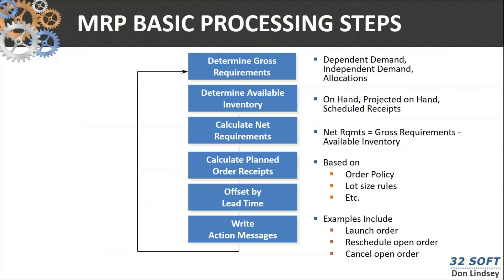The basic process of MRP follows this sequence: first, determining the gross requirements; then determining available inventory on hand and scheduled receipts, projecting that across the horizon; then calculating what we call net requirements. If you have a projected quantity on hand that's negative, that's the same as a net requirement. MRP is going to plan an order release for that period, offset it by the lead time to calculate the difference between the due date and the release date, and then write action messages.